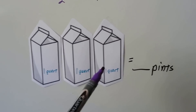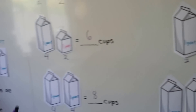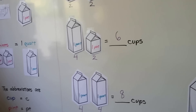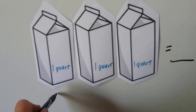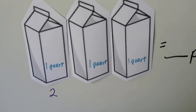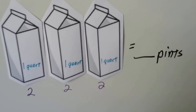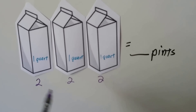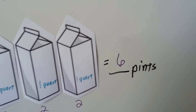Now we have three quarts. How many pints would that be? We know that one quart is two pints, so what would three quarts be? If one quart is two pints, then this is two pints, and that's two pints. We can skip count by twos: two, four, six. Or we could just add two plus two plus two. Two plus two is four, plus two is six. That would be six pints.